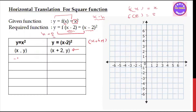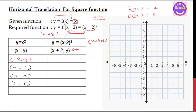For y equals x squared, we have x minus 2, x minus 2, and x minus 2 minus 2 plus 4. When x equals minus 2 minus 1, y equals minus 1 squared, which is minus 1 plus 1. When x equals 0, y equals 0.